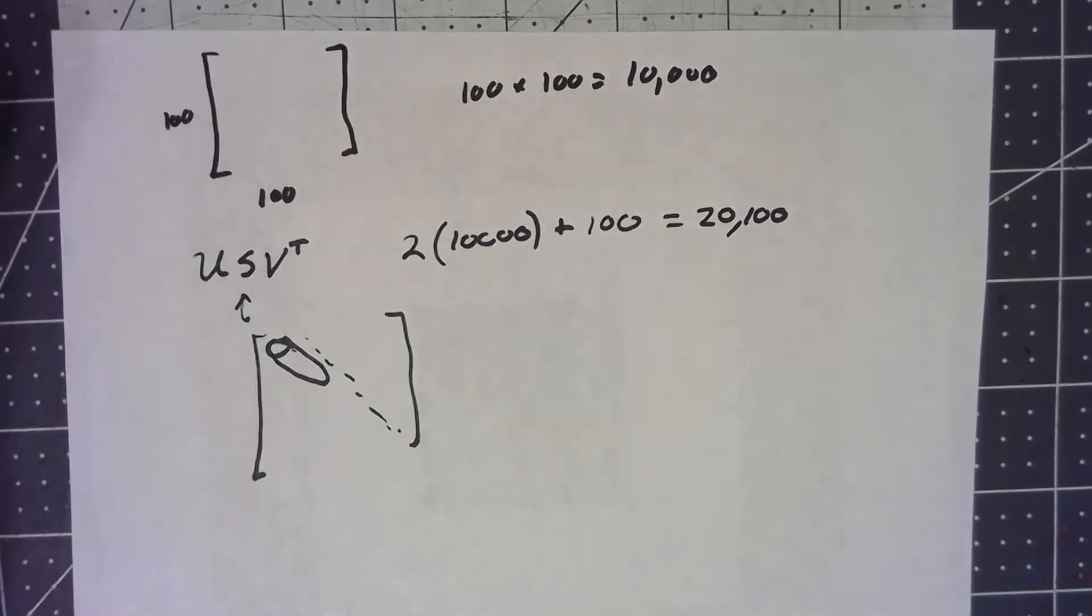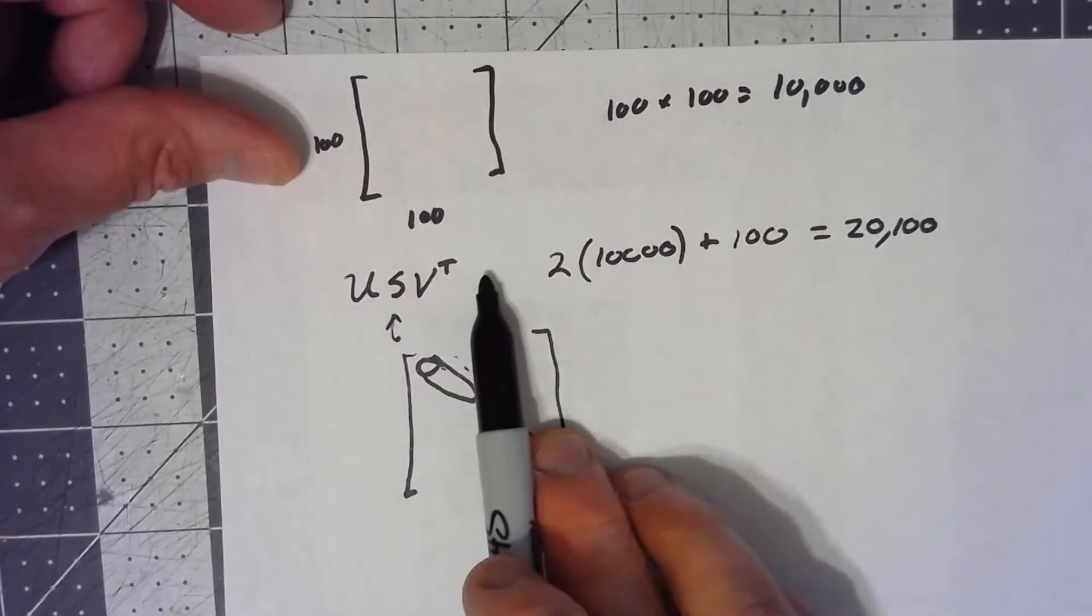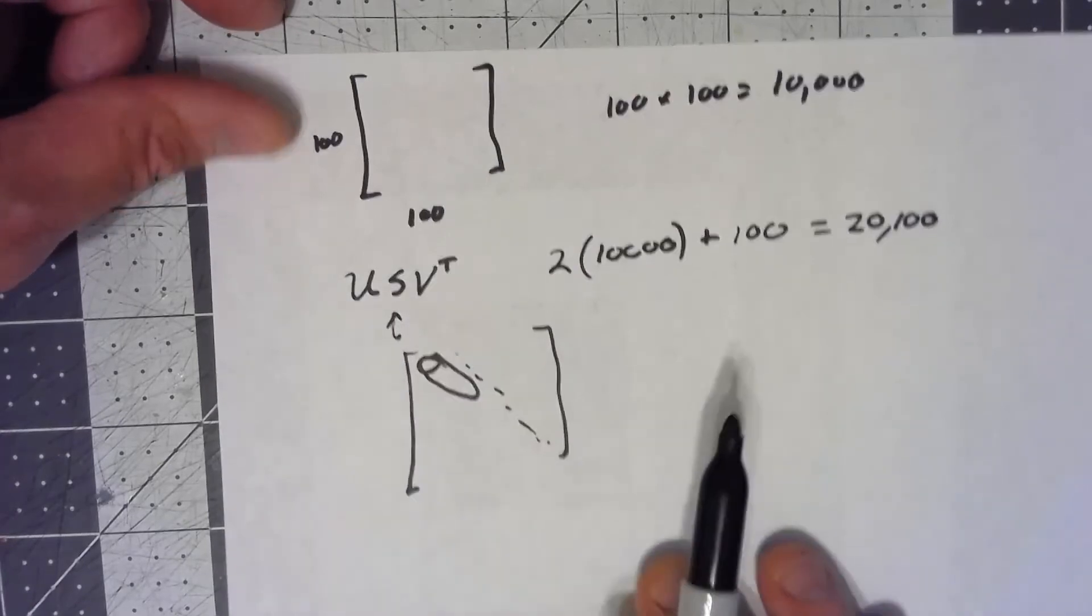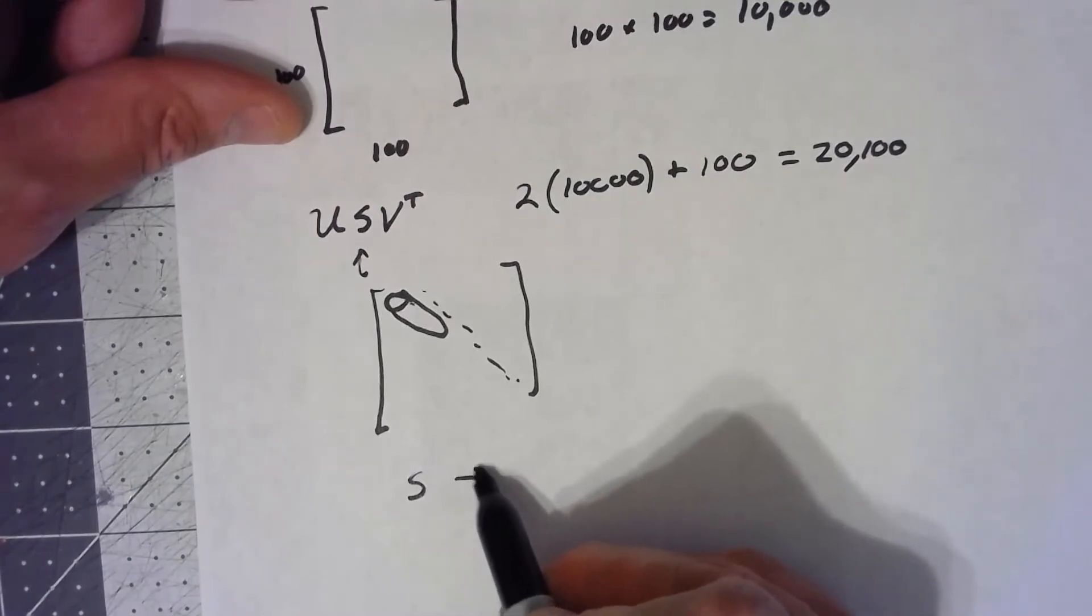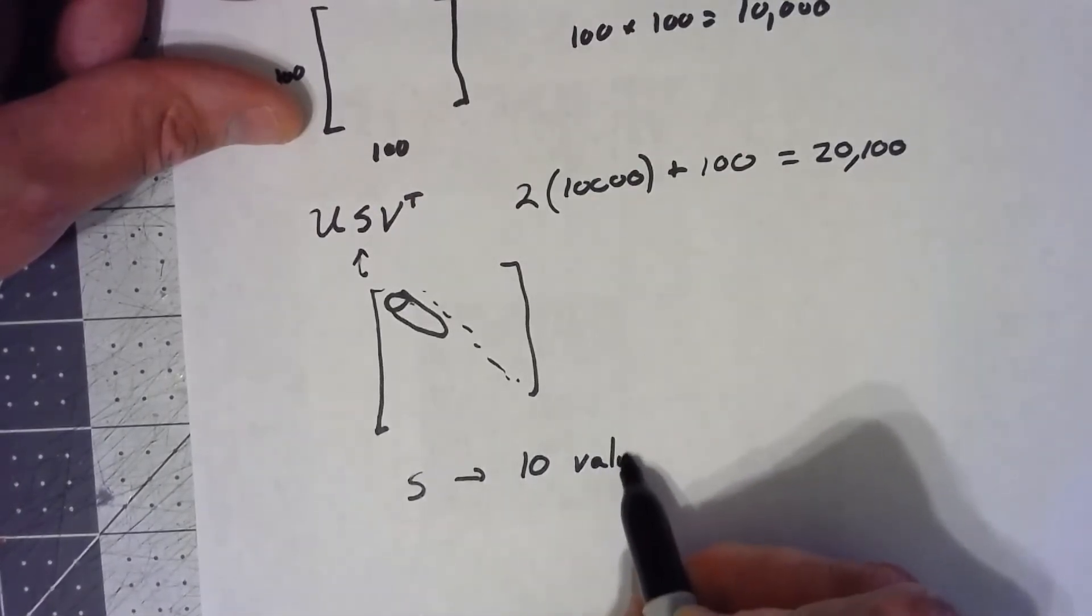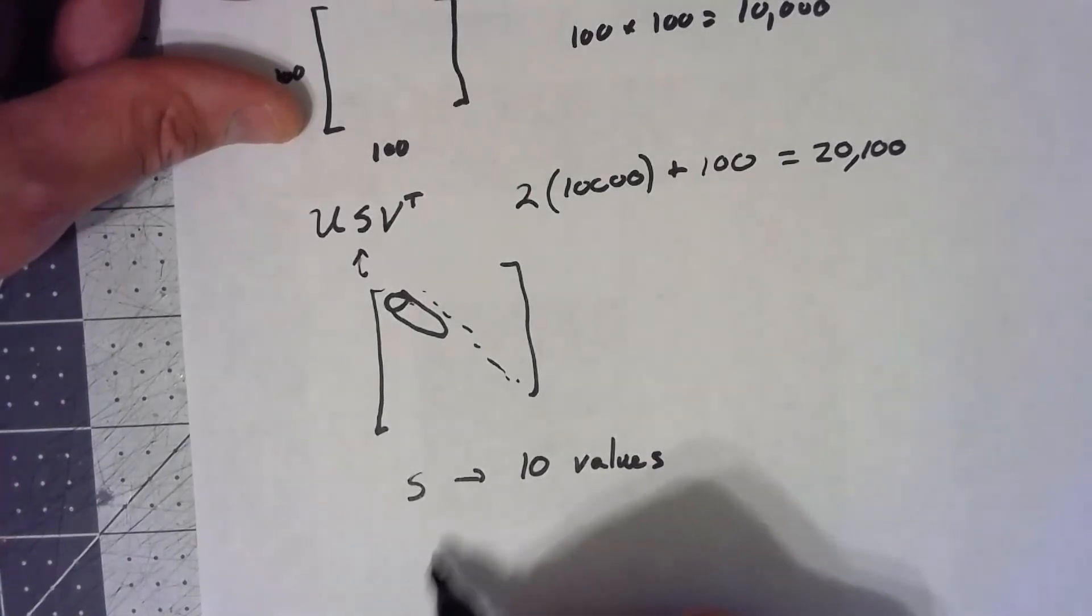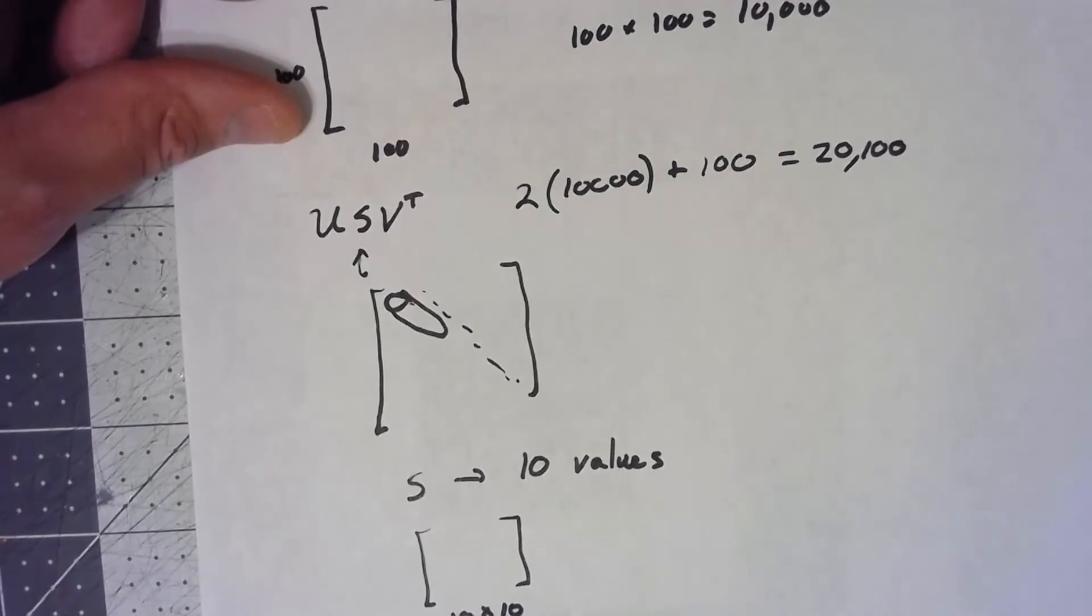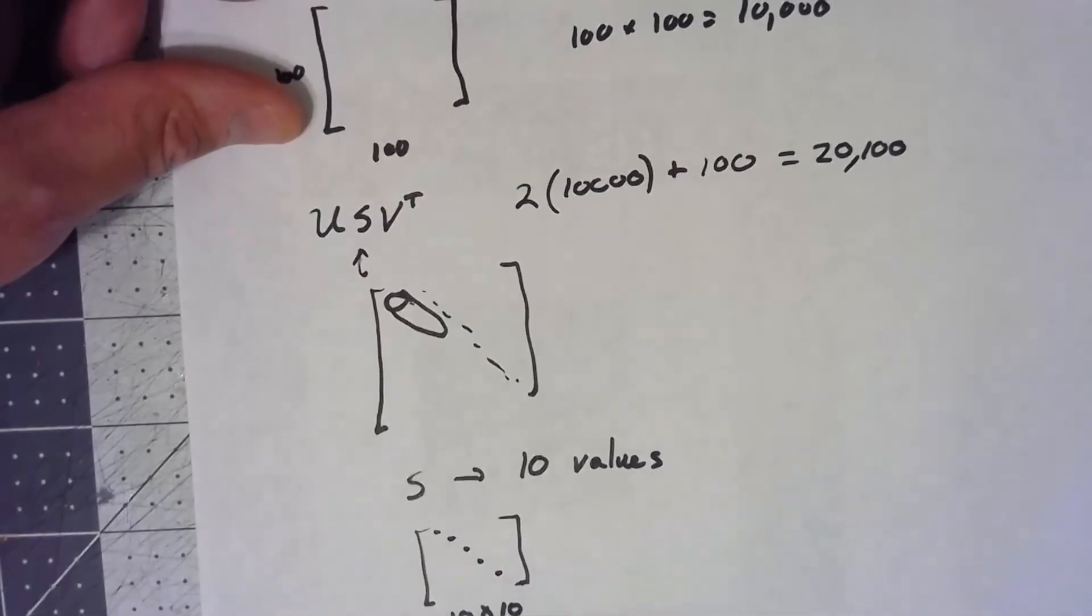If that's the case, then what can we do? Rather than having 100 by 100, 100 by 100, and 100, well, so let's start with the S. We're taking only the top 10 values. So my S is going to be a 10 by 10 matrix. And again, we're really only storing the 10 values because we're only storing the diagonal elements.